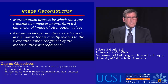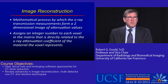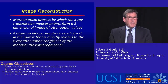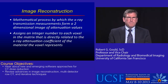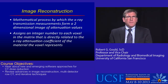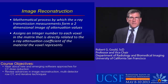The image reconstruction is the mathematical process by which the x-ray transmission measurements form the two-dimensional cross-section that we look at. It assigns an integer number to each voxel in the matrix that is related to the attenuation coefficient. What we have to work with are rays, or projections.